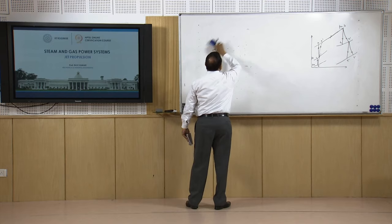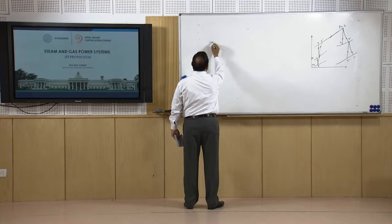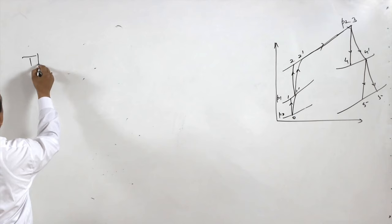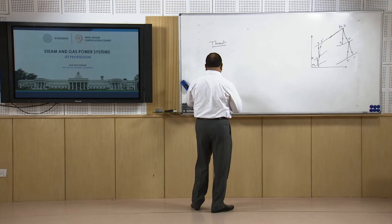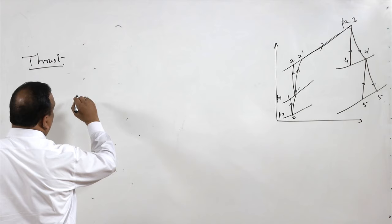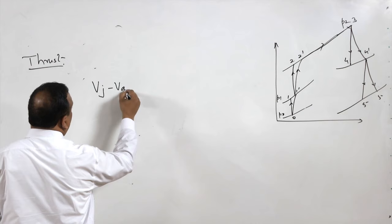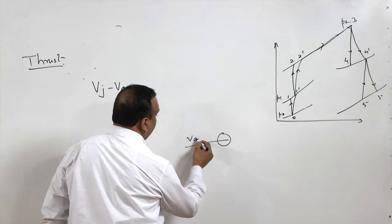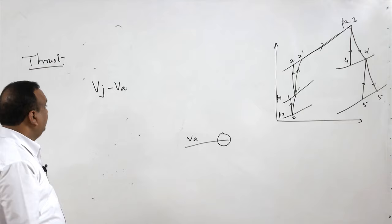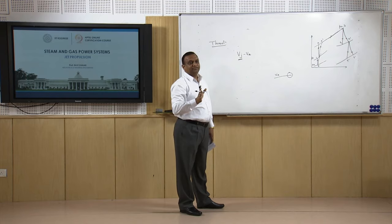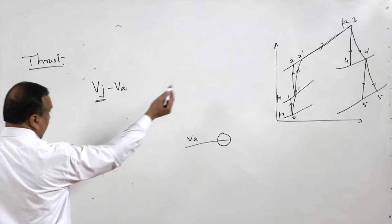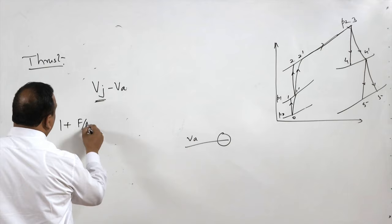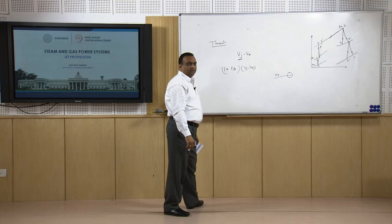There are certain terms used in jet propulsion. First is thrust: per kg of mass flow rate, thrust is the jet velocity minus aircraft velocity, V_j minus V_A. The jet engine moves with velocity V_A, and V_j is the velocity at which fluid leaves the nozzle. If we account for the mass of fuel, thrust becomes (1 + F/A)(V_j − V_A), where F/A is the fuel-to-air ratio.